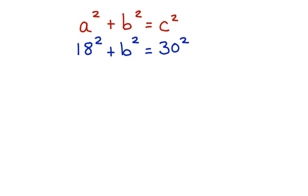Now, let's solve this equation for B. 18 squared is equal to 324 plus B squared equals 30 squared, which is 900.